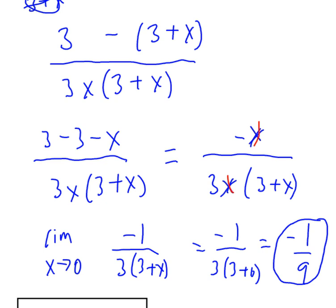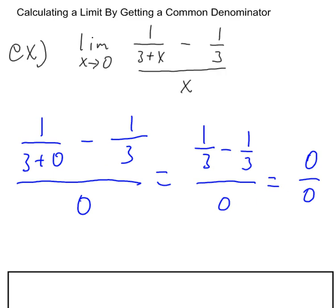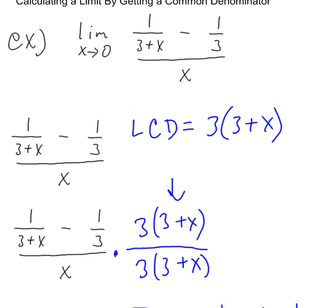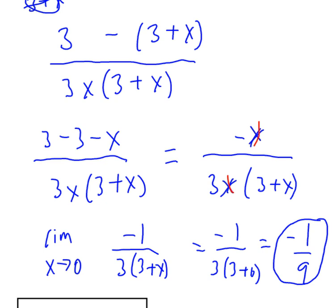And that's what the limit of that expression becomes. So we went all the way from that zero over zero to removing that zero over zero and coming up with a negative one ninth.